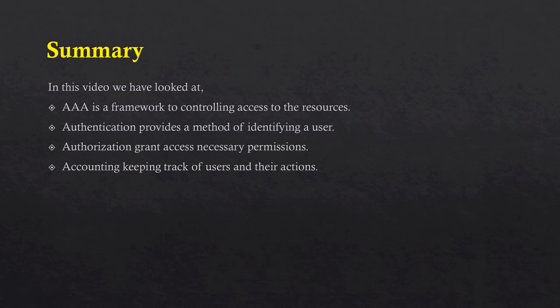In summary, AAA is a framework for controlling access to resources. Authentication provides a method of identifying a user. Authorization follows authentication and grants access with necessary permissions. Accounting keeps track of users and their actions. Thanks for watching.